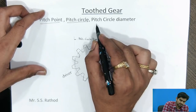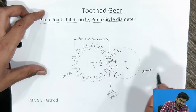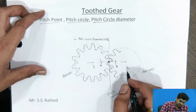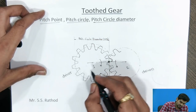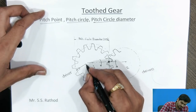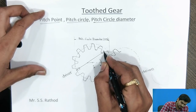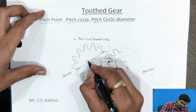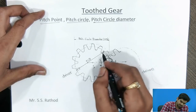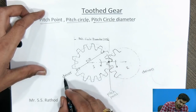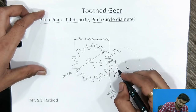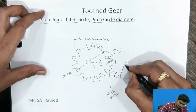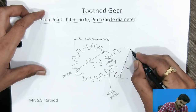Next one is pitch circle diameter. The pitch circle diameter is nothing but the diameter of the pitch circle, abbreviated as PCD. This is the pitch circle diameter of the driver gear, and this is the pitch circle diameter of the driven gear.